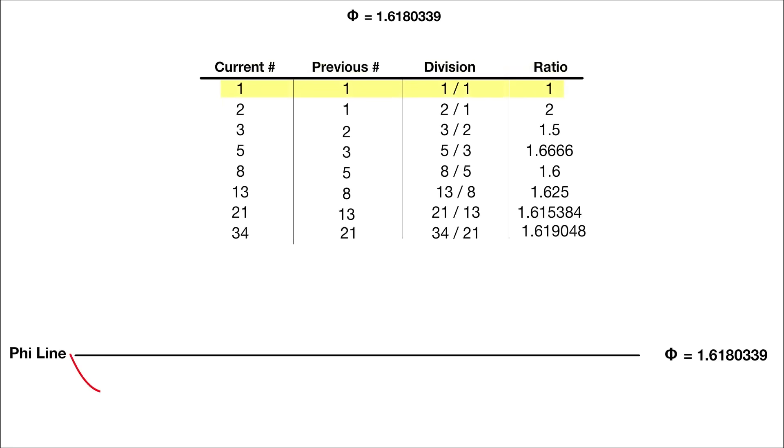One into one is one. Well that's not close at all. Two into one is two. This time it's over Phi, but closer. Three into two is 1.5, which is under, but closer still. Five into three is 1.666. This time it's over, but even closer. Continuing with that, it's 1.6 and then 1.625, 1.615384, 1.619048, and so on.